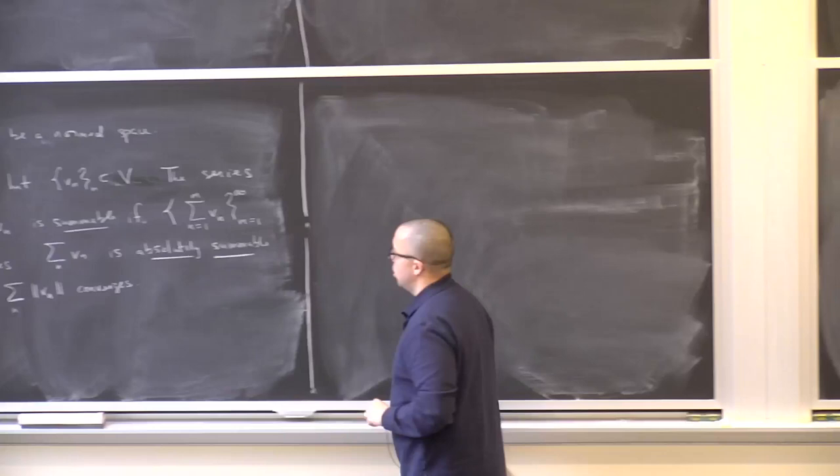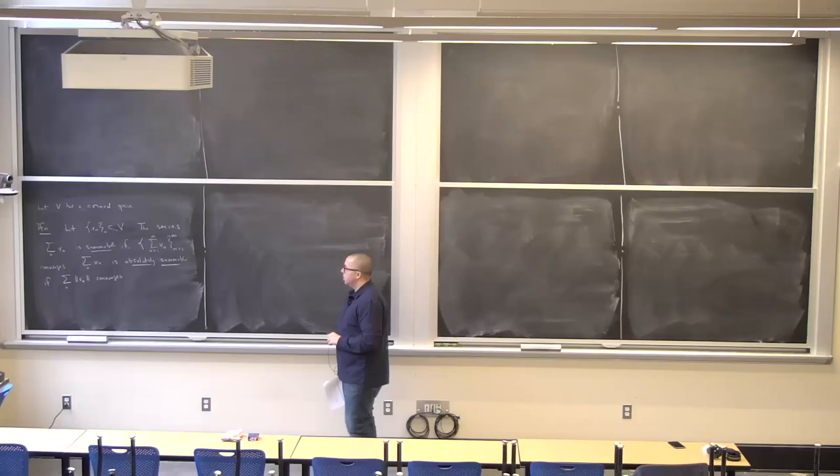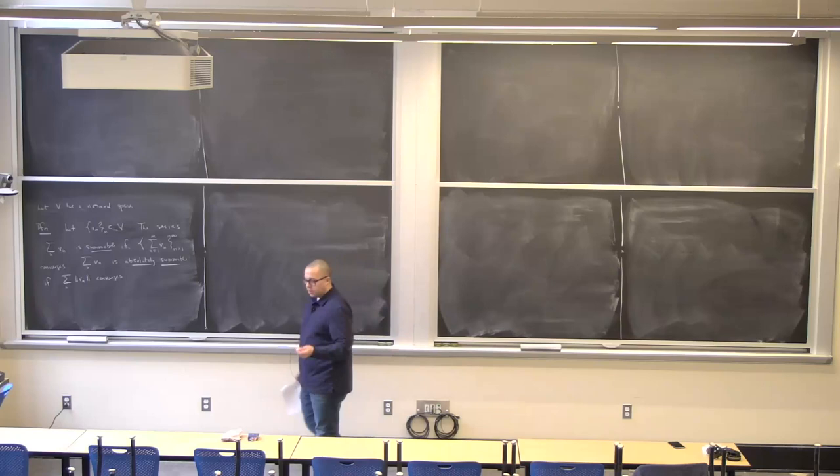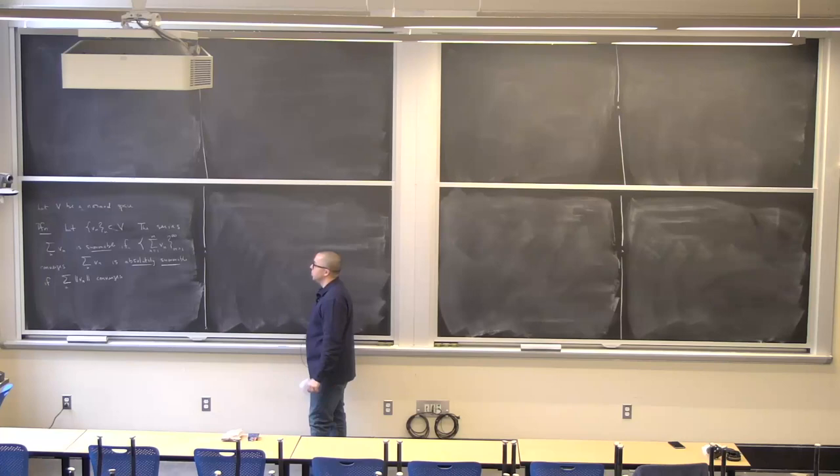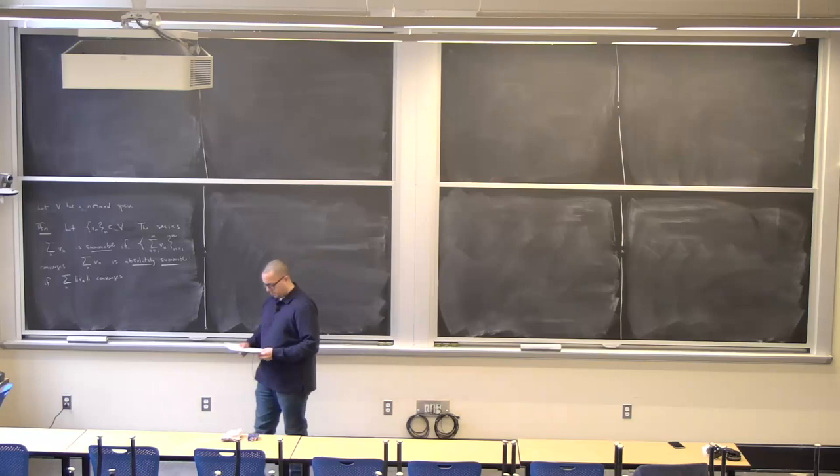This is just like the definition of convergence of a series of real numbers, which you dealt with in earlier analysis, and absolute convergence. I'm using the terminology 'absolutely summable' because this is the terminology Richard Melrose used, so I want to stick to what he's using.